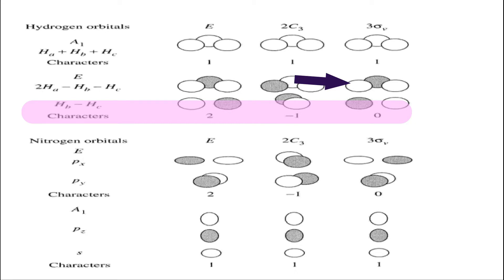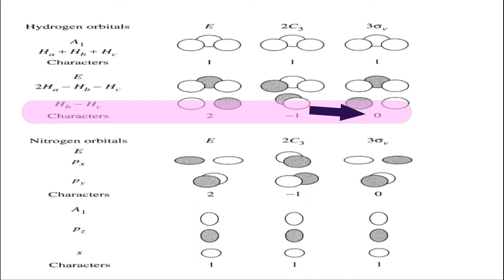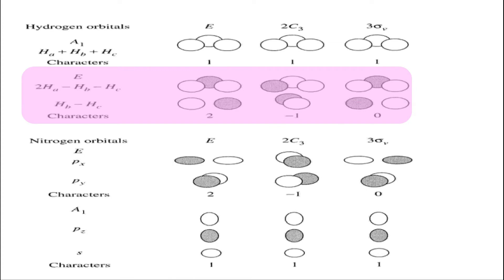So the characters for E symmetry are: E=2, C3=−1, σv=0. This is a two-dimensional representation. The two LCAOs for E symmetry are: (2Ha − Hb − Hc) and (Hb − Hc). These are the LCAOs obtained from the grouping of the hydrogen orbitals.